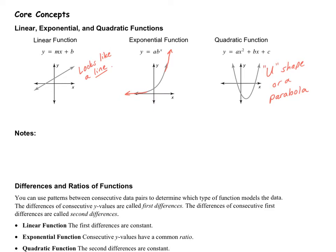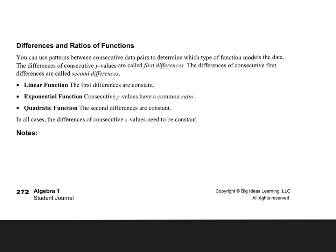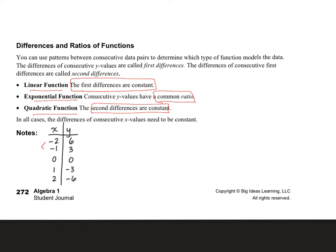We can also find out if a function is linear, exponential, or quadratic by looking at the numbers. A linear function has first differences that are constant. For example, if we look at a table where x numbers are adding 1 each time and y numbers are subtracting 3 each time, since the first differences are constant, this is a linear function.